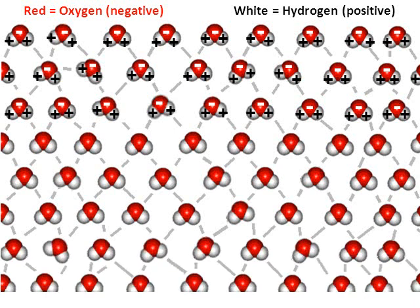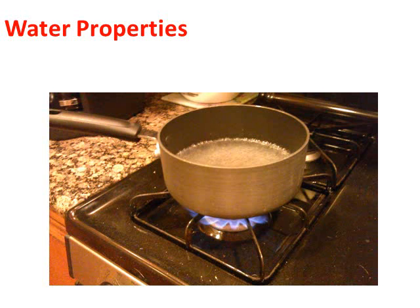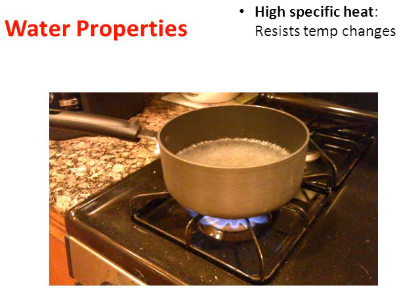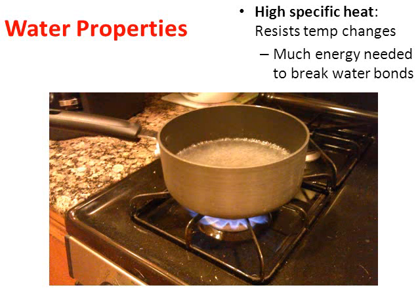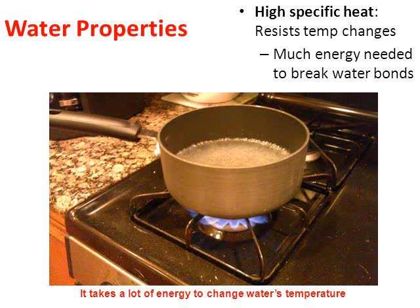Water arranges itself in this configuration whenever you have a pool or a puddle or a container full of water. A couple properties to mention about water besides it being polar: because water is polar, it has what's called a high specific heat. This simply means that it will resist temperature changes. In the picture you can see a pot of boiling water — it takes a lot of energy to break the bonds and boil water. It takes several minutes over an open flame to generate enough heat to make that water boil.